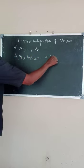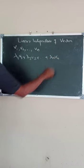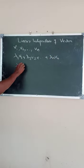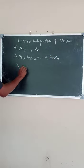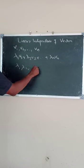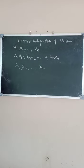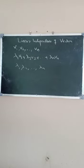... plus lambda n Vn, where lambda 1, lambda 2, ... lambda n are scalars, is called a Linear Combination of Vectors.